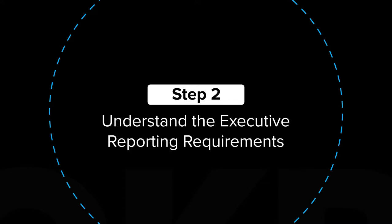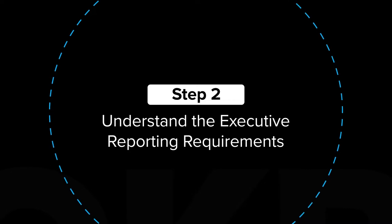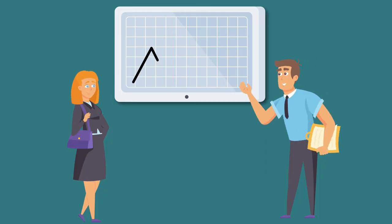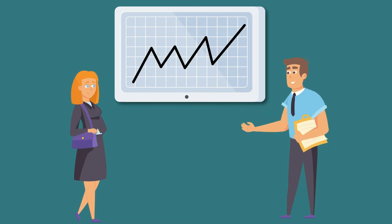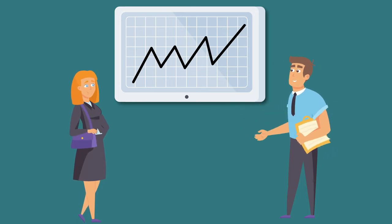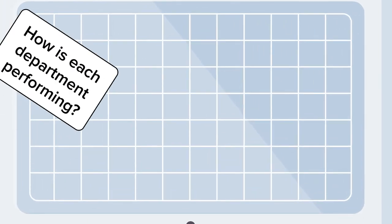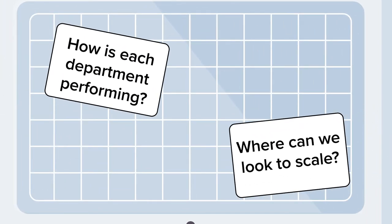Step 2: Understand the Executive Reporting Requirements. Build reporting into your OKR implementation rather than thinking of it as an afterthought. Ask your stakeholders what questions they'd like answers to. It's much easier to implement OKRs when you know what the output should be.